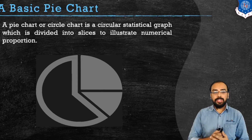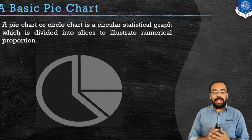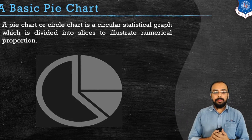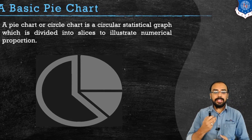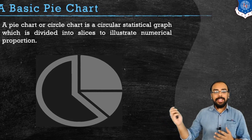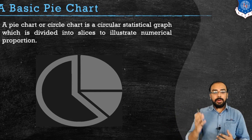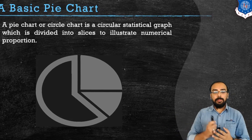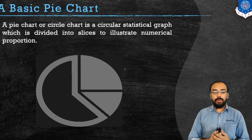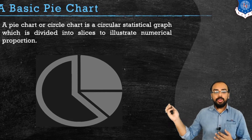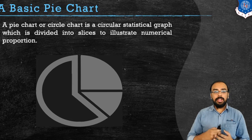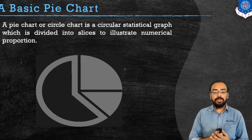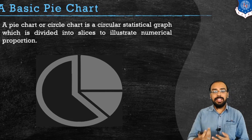Now let's look at what a pie chart is. A pie chart is also known as a circle chart. It is a circular statistical graph divided into a number of slices, also known as wedges. Each slice indicates a numerical proportion, and the entire proportion totals 100 percent.